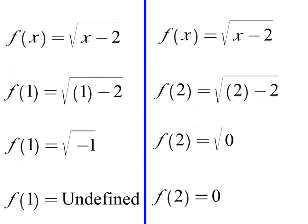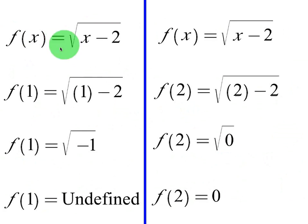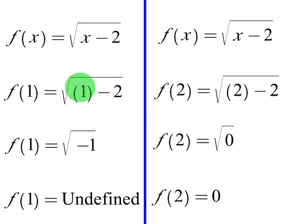This is quite different from odd root functions. If we try to plug in 1 into a square root function — which is an even root — we get the square root of negative 1, which is undefined. Since we can't plug that number in and get something back, it can't be part of the domain. Unlike odd root functions, we have to use a method to figure out the actual domain.